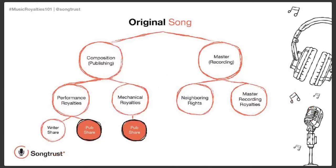Here we have the diagram of the way that an original song is broken down in the music industry. On the left side we have the composition, and on the right side the master recording. Publishers, and here at SongTrust, we deal with collecting on the composition — collecting the royalties that are generated from your ownership of that original composition. Those composition royalties are broken down into performance and mechanical royalties. Performance royalties are broken down into the writer's share and the publisher's share. Mechanical royalties are only paid out to publishers. The two red highlighted circles are what we allow creators and rights owners to access.